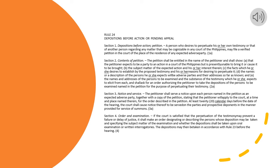Section 4. Order and Examination. If the court is satisfied that the perpetuation of the testimony may prevent a failure or delay of justice, it shall make an order designating or describing the persons whose deposition may be taken and specifying the subject matter of the examination and whether the depositions shall be taken upon oral examination or written interrogatories. The depositions may then be taken in accordance with Rule 23 before the hearing.